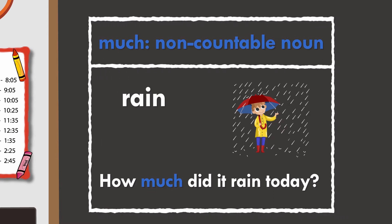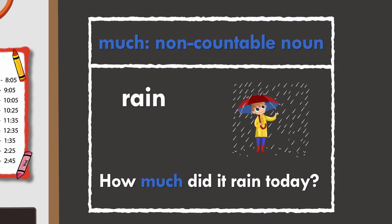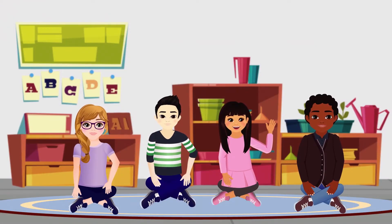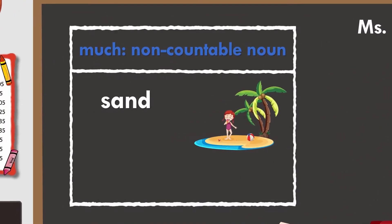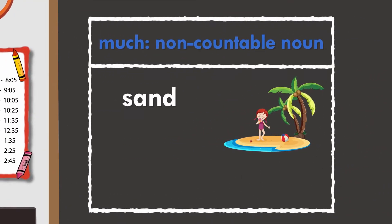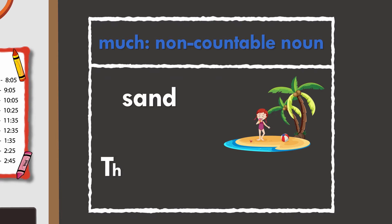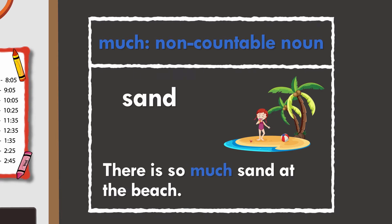Can you think of some more examples? Sand. Great work. Sand is also a non-countable noun. You would say, there is so much sand at the beach.